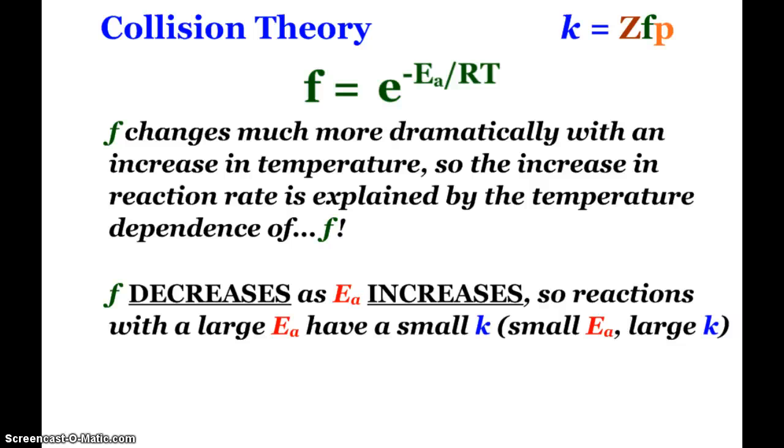This variable F decreases as the activation energy increases. If we have a reaction with a very large activation energy, it will have a small rate constant. If there's a small energy of activation, we will have a large rate constant. You might be asked about looking at a particular reaction rate constant and how that reflects in the activation energy. I don't believe we'll see any plug and chug calculations with that.